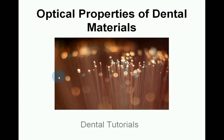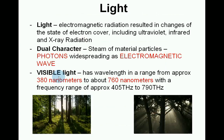In this lecture we're going to talk about the optical properties of dental materials. Light is electromagnetic radiation resulting in changes of the state of electron cover, including ultraviolet, infrared and x-ray radiation. It has a dual character: it is a stream of material particles called photons, widespread as electromagnetic waves. Visible light has a wavelength in the range from approximately 380 nm to about 760 nm.